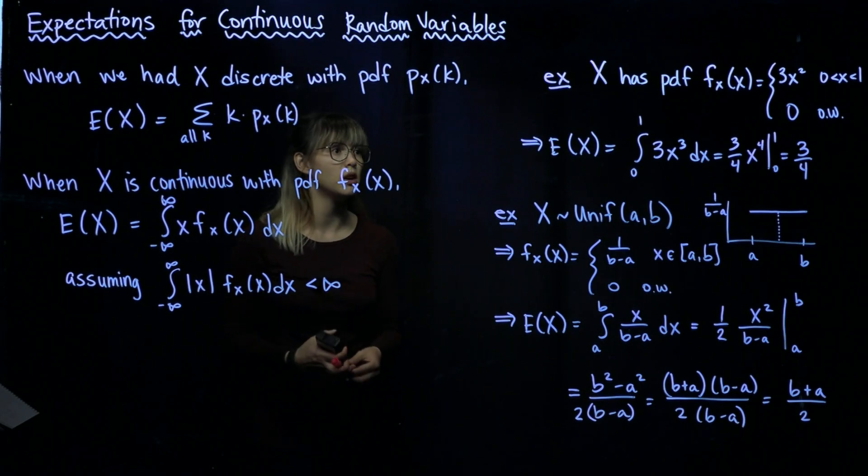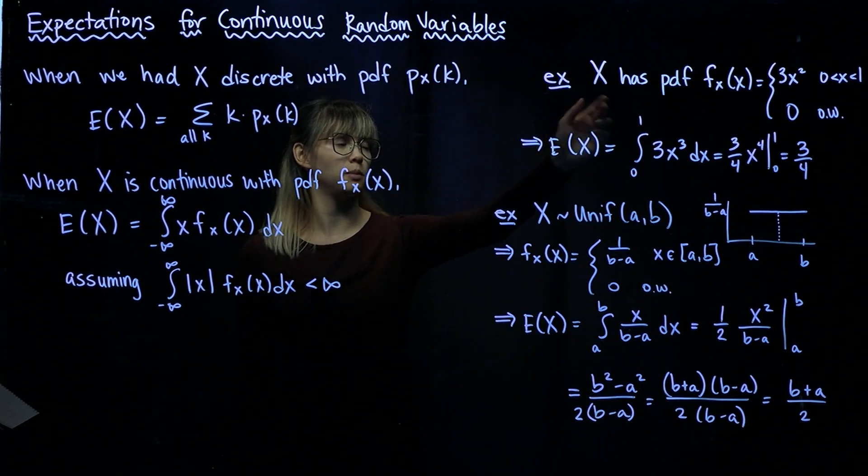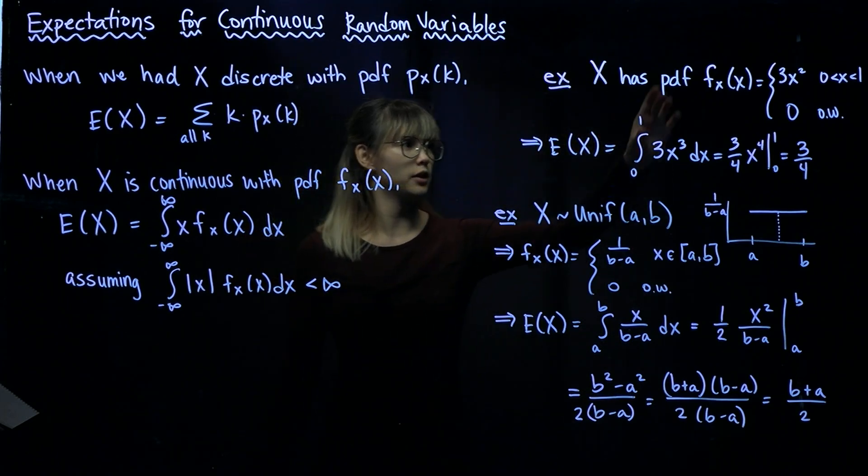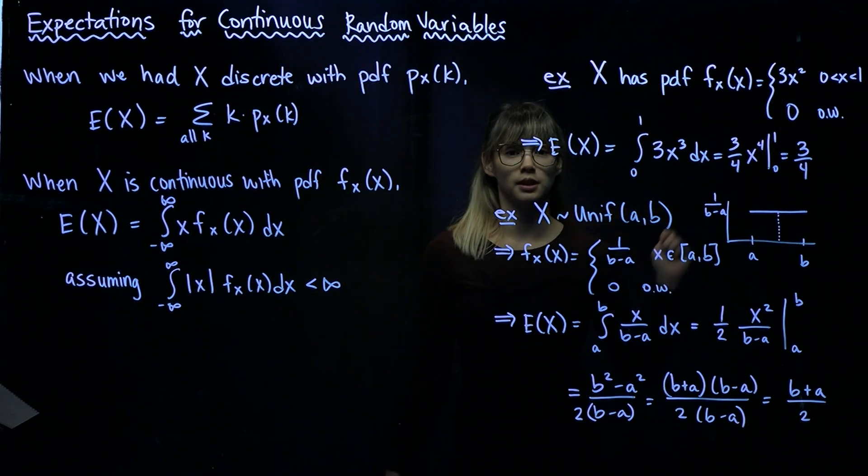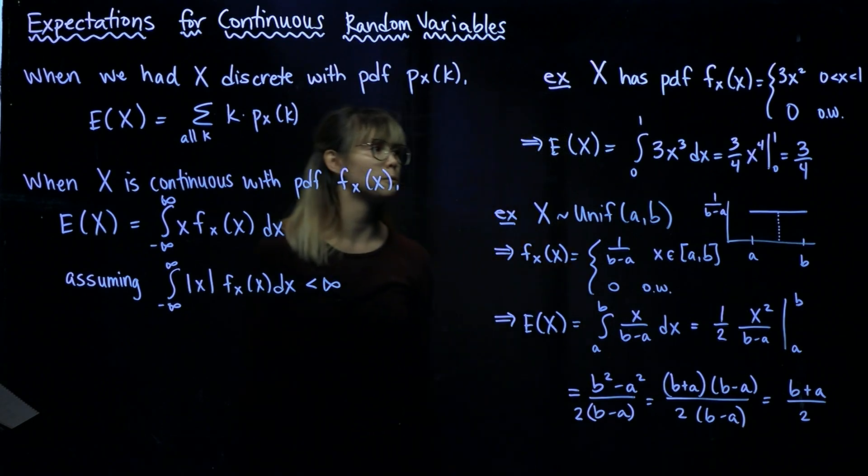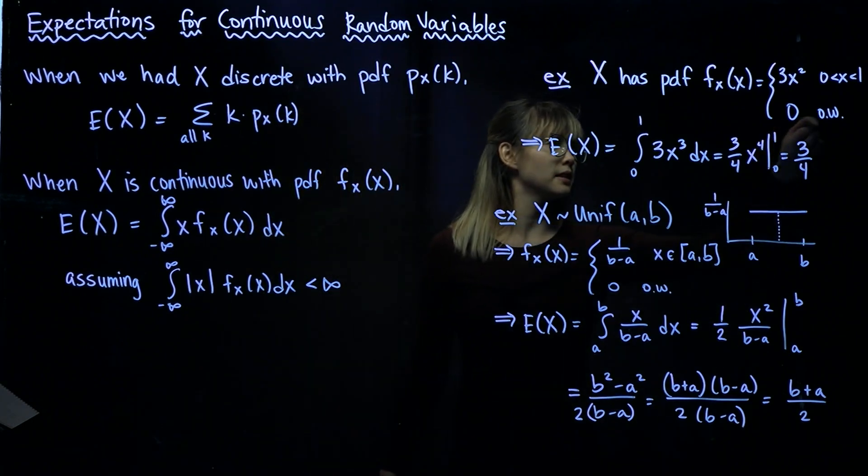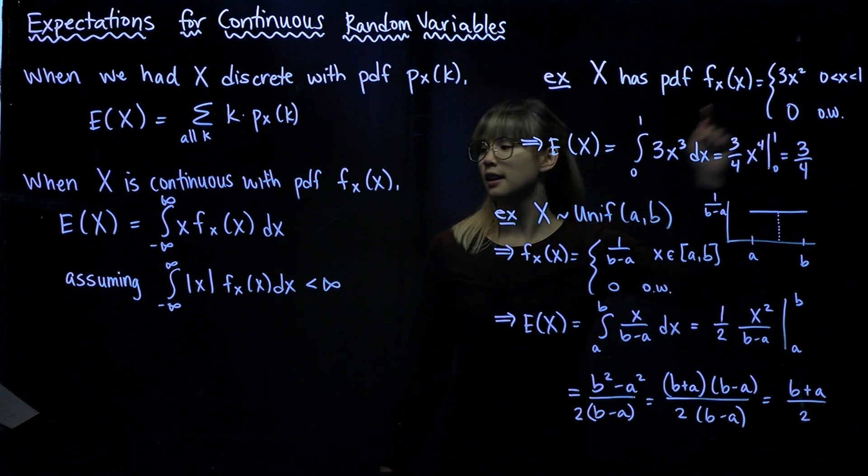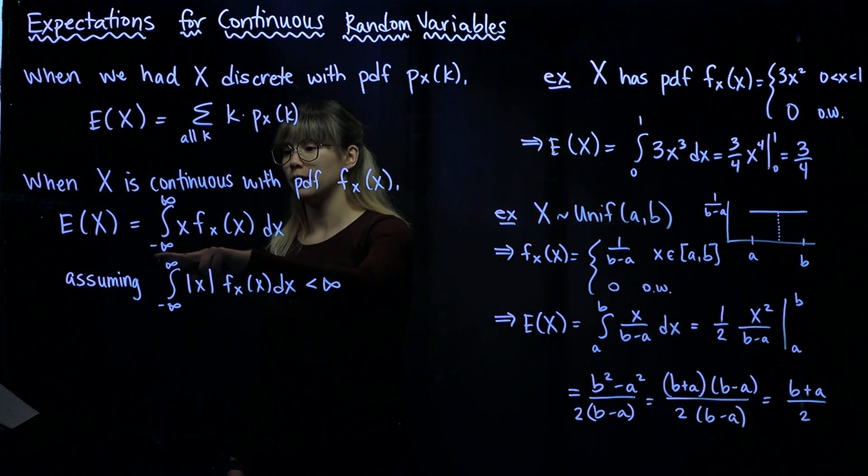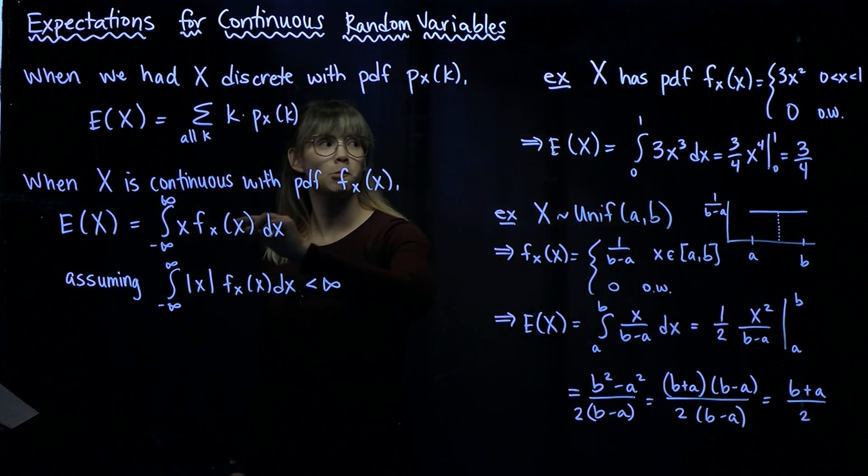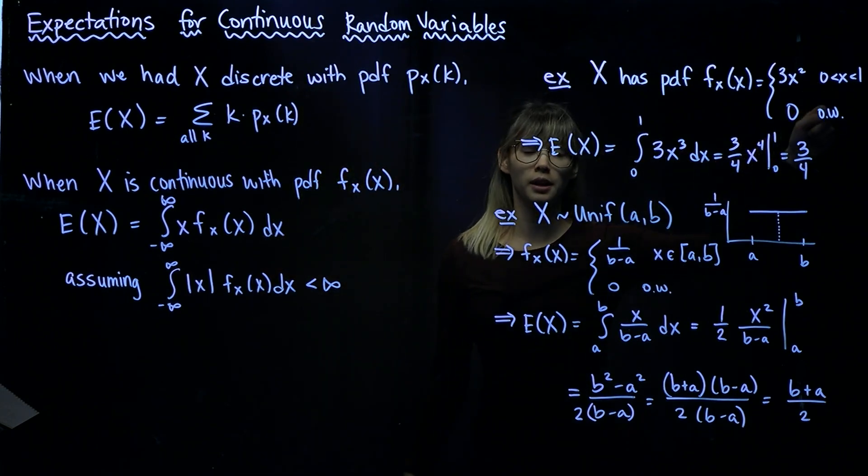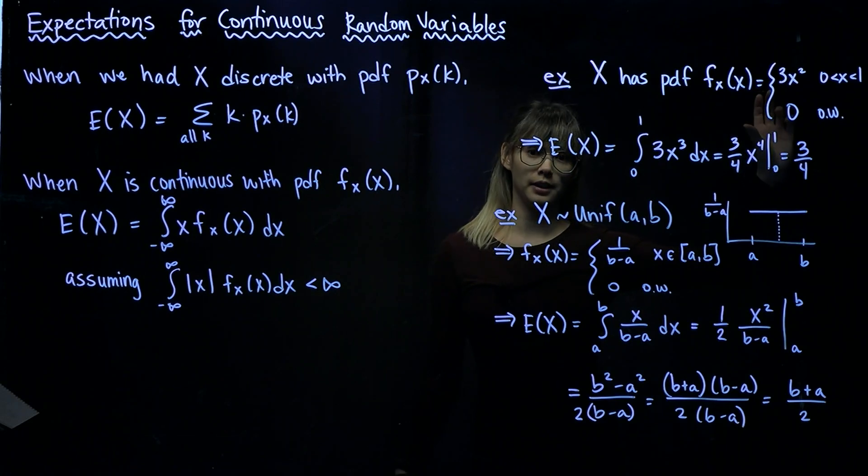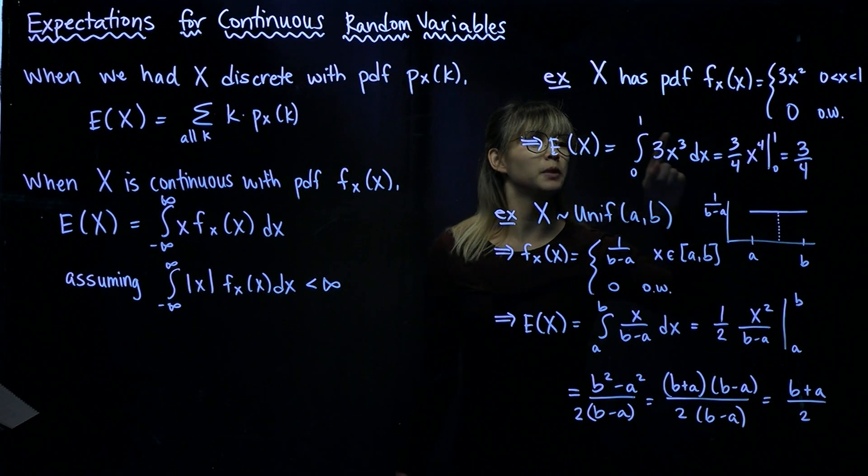All right, so let's do a couple examples to see how this works. So first, let's have X be a continuous random variable with the following PDF. It's going to be 3X squared whenever X is between 0 and 1 and 0 otherwise. So what this means is that when we integrate from negative infinity to infinity, since we would be integrating over 0 for anything outside of 0 to 1, then we can really just simplify this integral down to integrating over 0 to 1.